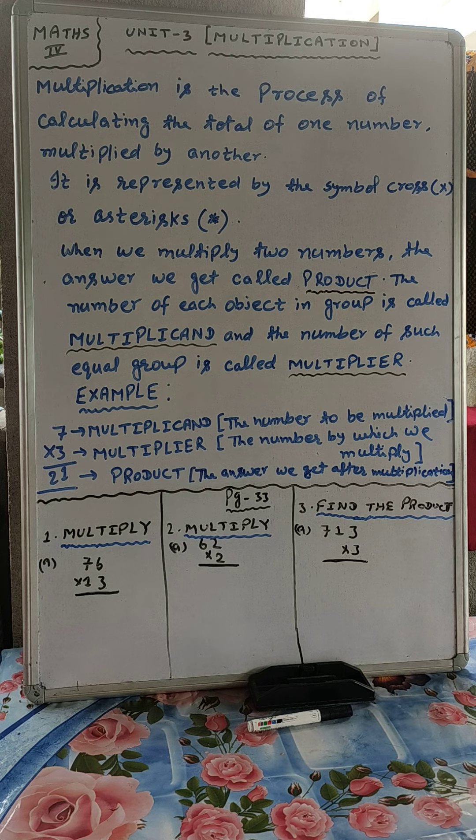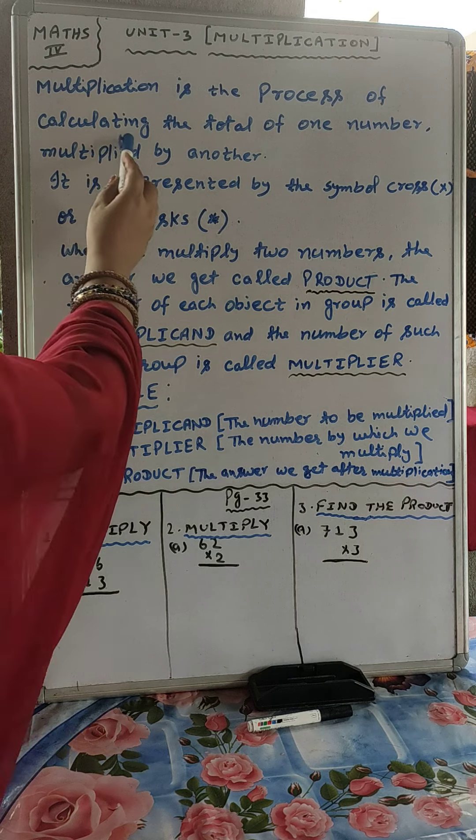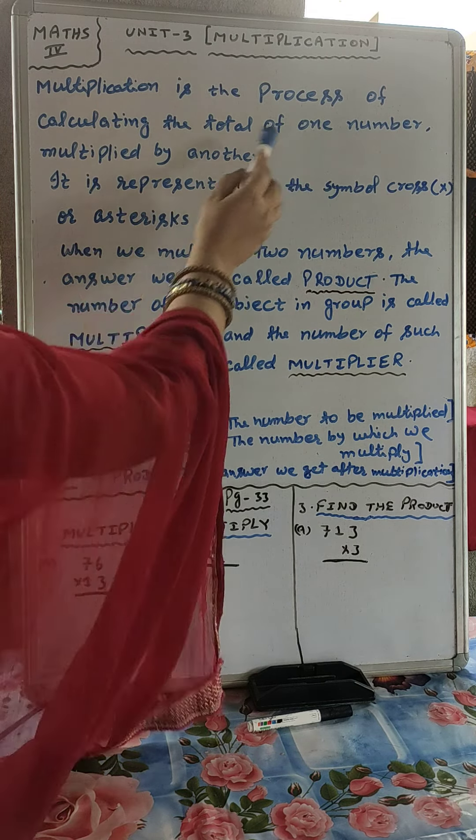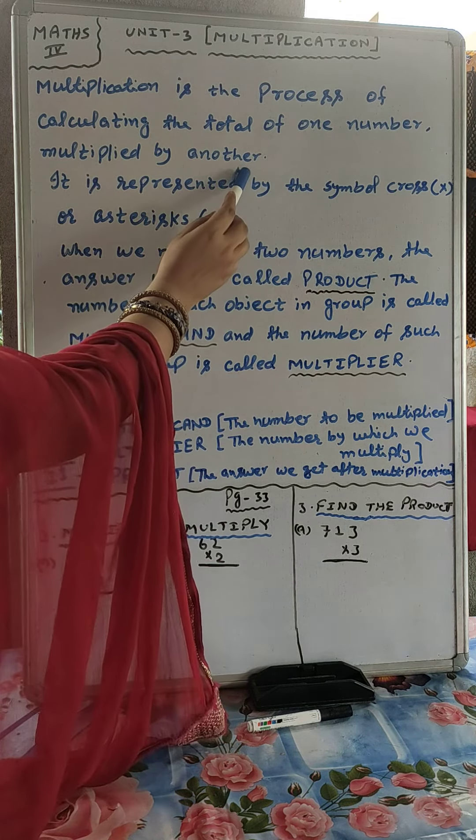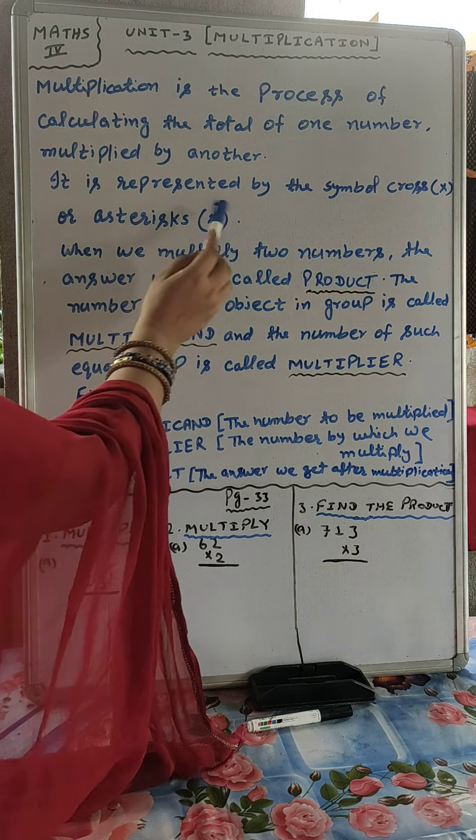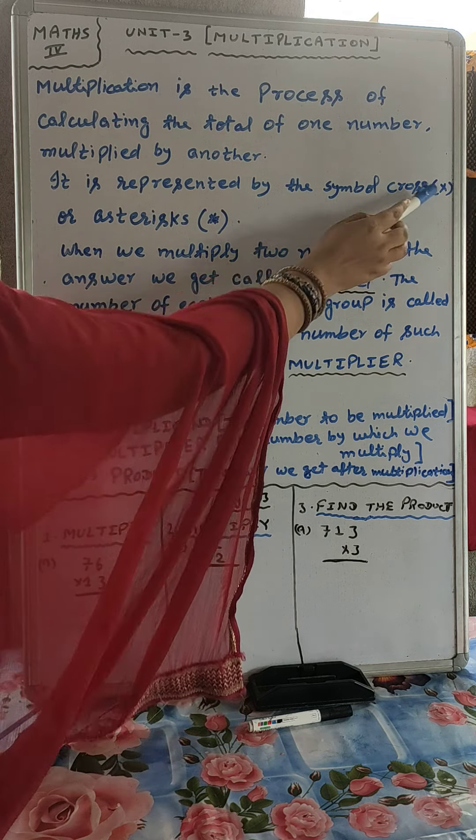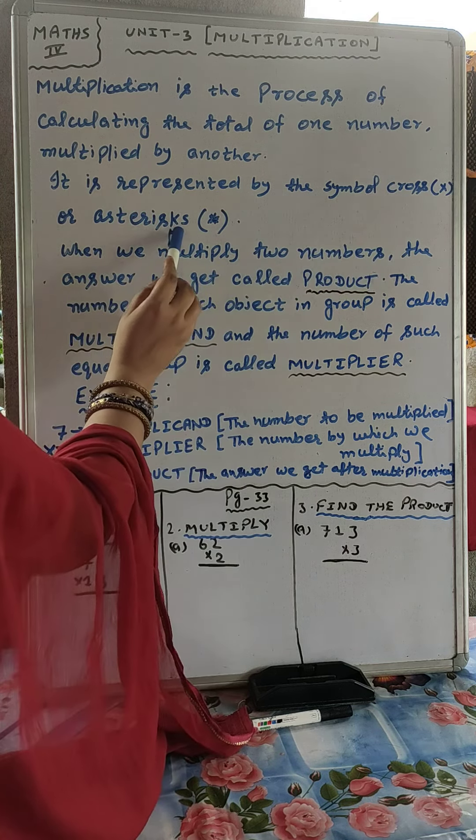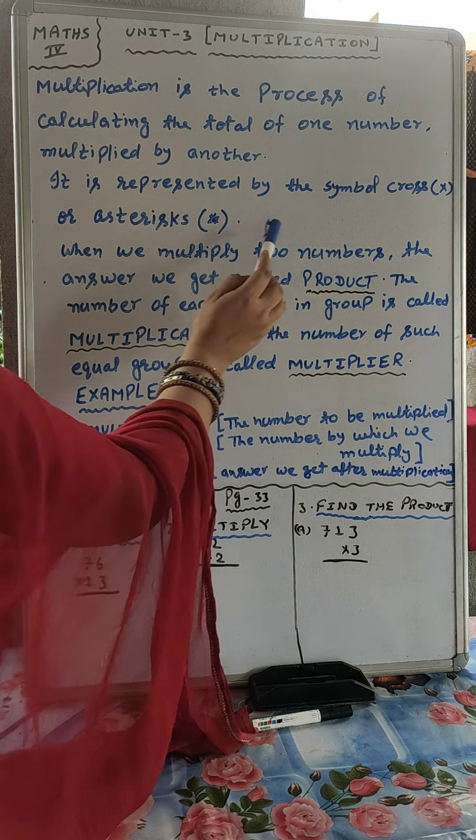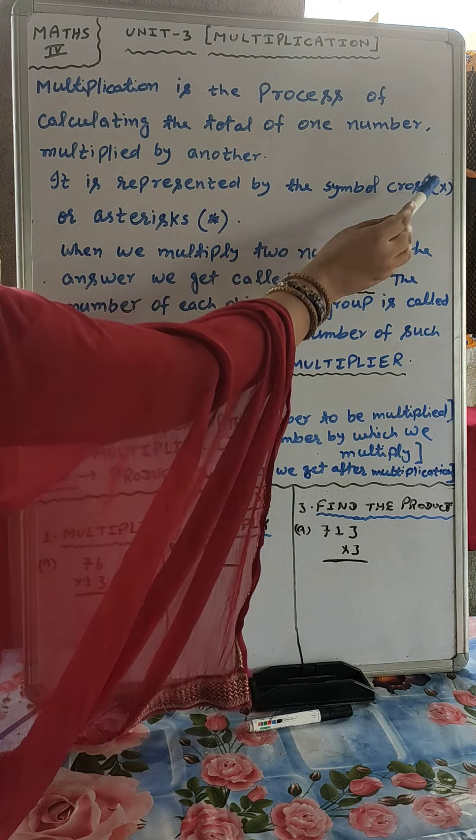Multiplication is the process of calculating the total of one number multiplied by another. It is represented by the symbol cross or asterisk, but we will use the cross symbol for multiplication.